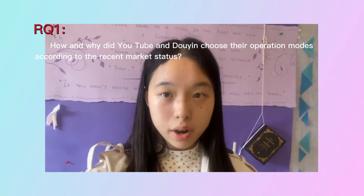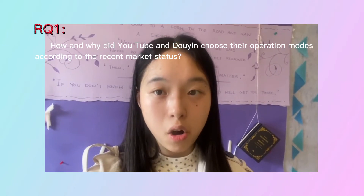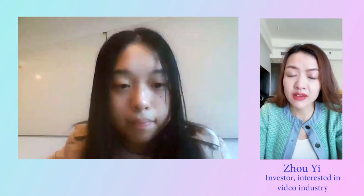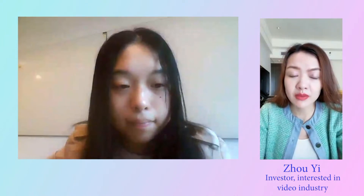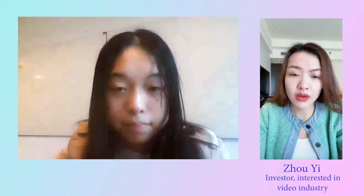My first research question is: how and why did YouTube and Douyin choose their operation modes according to the recent market status? Market status is a combination of user characteristics and technology-driven factors. There is also a trend of short videos growing very quickly. If you look at TikTok, that's definitely a trend, taking advantage of technology development, and the mentality of users on the internet has changed as well.